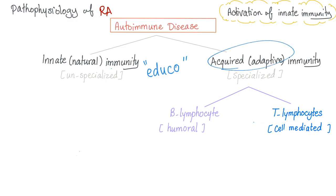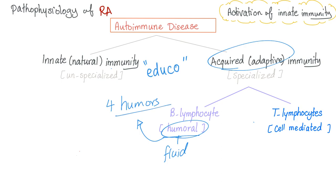Now, acquired or adaptive immunity. We have two types: B lymphocytes, responsible for humoral immunity — 'humoral' meaning fluid, because B lymphocytes secrete antibodies into body fluids like blood, saliva, and mucous membranes. And T lymphocytes, responsible for cell-mediated immunity, where these cells destroy other cells.